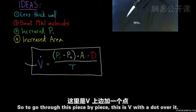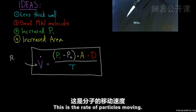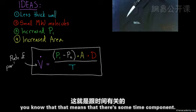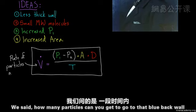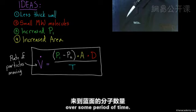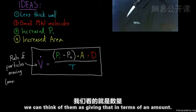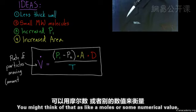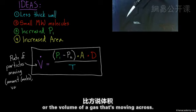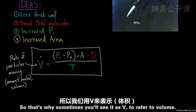To go through this piece by piece, this V with a dot over it, this is the rate of particles moving. And when I say rate, you know that means there's some time component. So this gets to what the challenge was, right? We said, how many particles can you get to go to that blue back wall over some period of time? And sometimes when we talk about particles, we can think of them as giving that in terms of an amount, you might think of that as like a moles or some numerical value, or the volume of a gas that's moving across. So that's why sometimes you'll see it as V, to refer to volume.